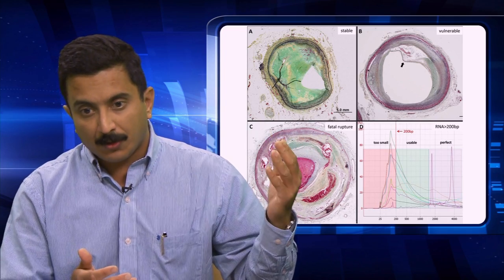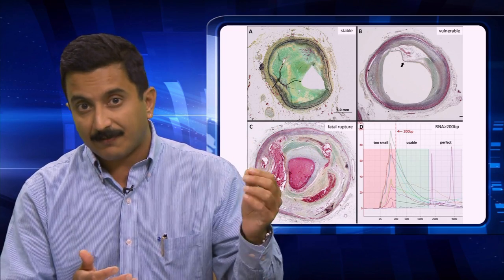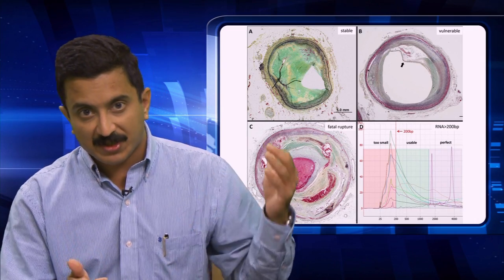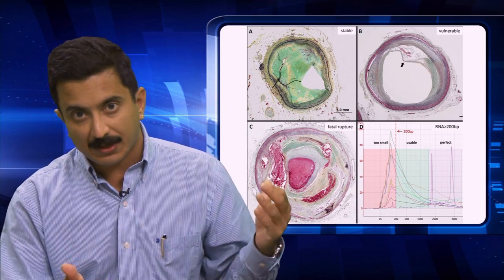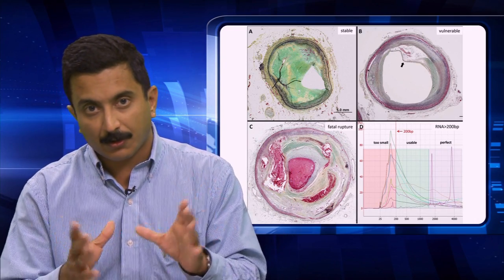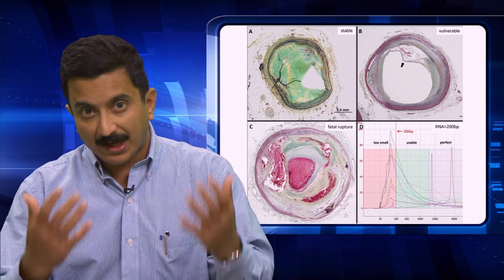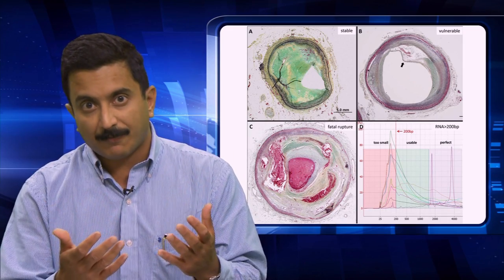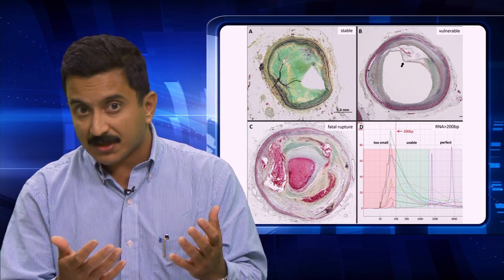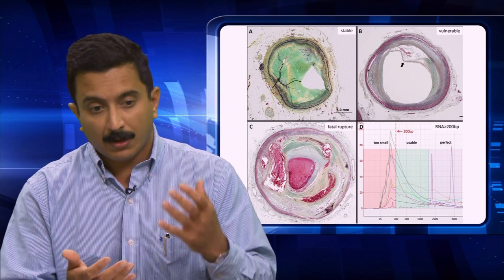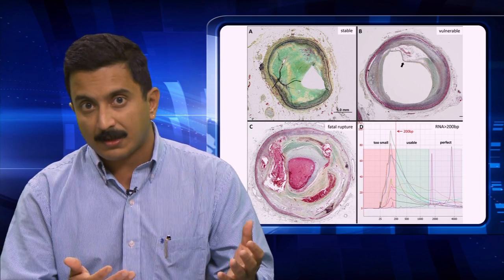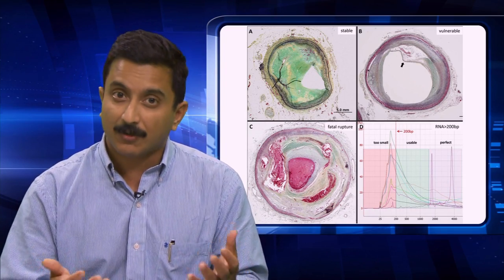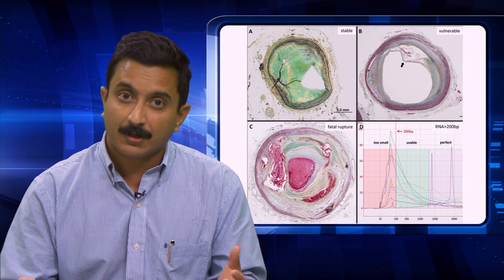In a vulnerable plaque, when that thin fibrous cap ruptures, what happens is what we see in panel C, where the contents of the necrotic core spill out into the lumen. These usually form a thrombus which occludes blood flow to the heart muscle, leading to a myocardial infarction — and unfortunately, most often a fatal myocardial infarction.